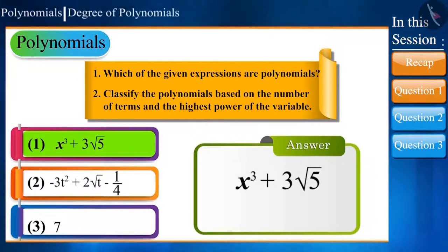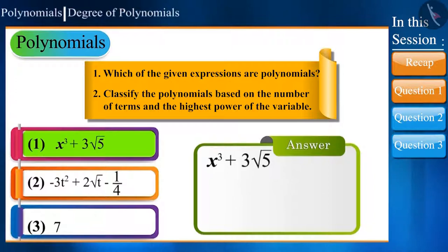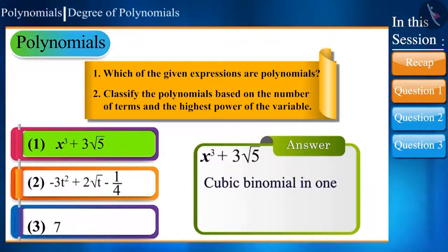is 3, and there are two terms: x³ and 3√5. This means it is a cubic binomial in one variable.